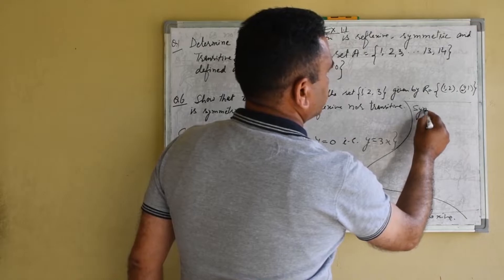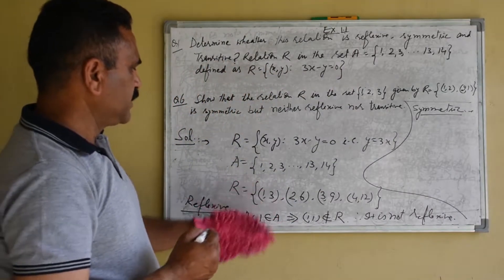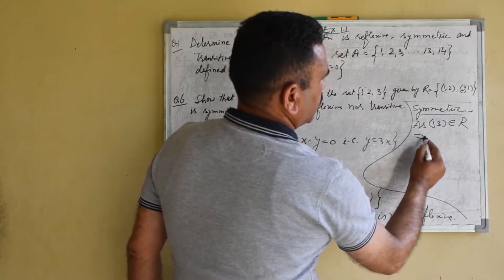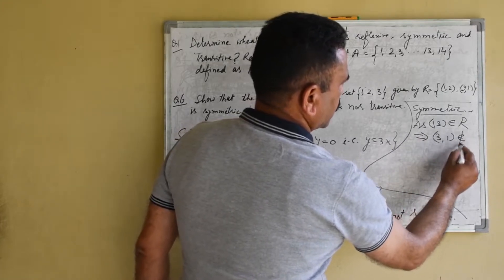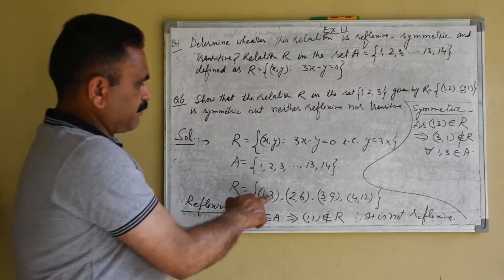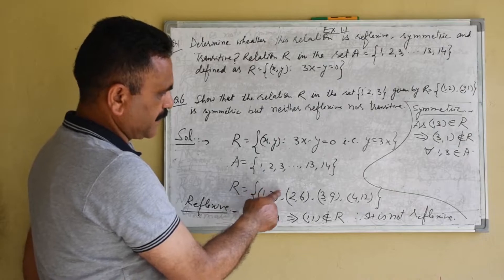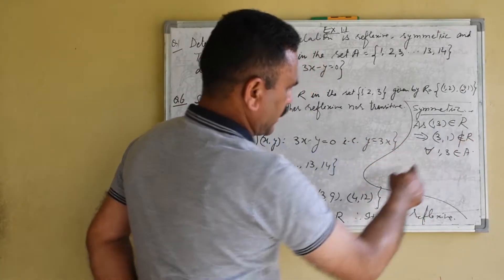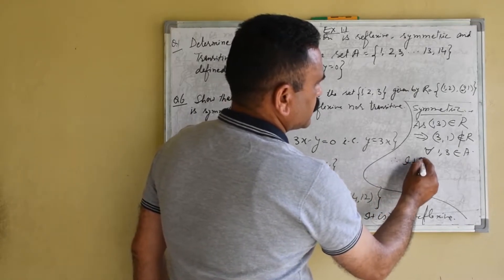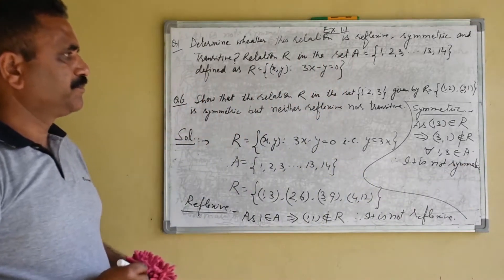Second, symmetric. Since (1, 3) belongs to R, this implies (3, 1) does not belong to R, for 1 and 3 belonging to A. The ordered pair (1, 3) is a member of R, but the ordered pair (3, 1) is not there in relation R. Therefore, it is not symmetric.